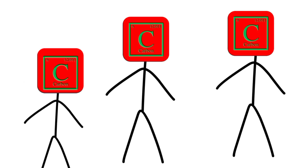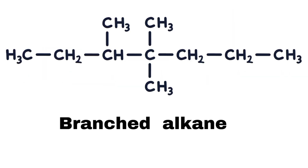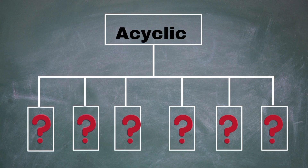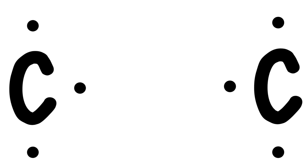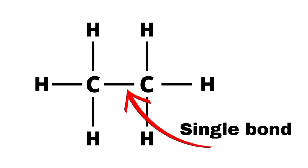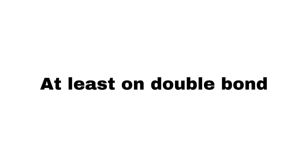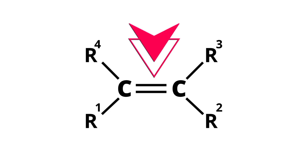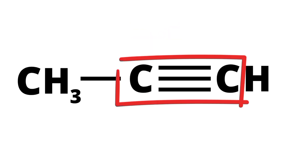Key features of open-chain organic compounds include a linear or branched structure, where the carbon atoms are connected in a straight line or in a branched manner. They can be further classified based on the type of bonding: alkanes have single bonds between carbon atoms, alkenes have at least one double bond, and alkynes have at least one triple bond.